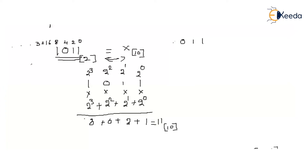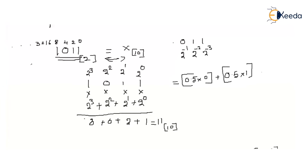Right after the binary point, the weights are: first digit = 2^(−1), second digit = 2^(−2), third digit = 2^(−3). So 2^(−1) = 0.5; 0.5 × 0 = 0; plus 2^(−2) = 0.25.